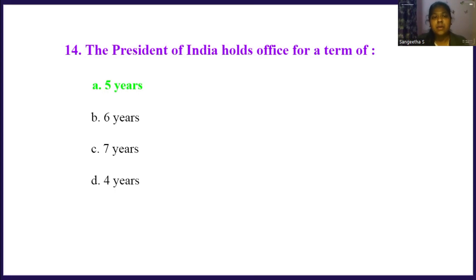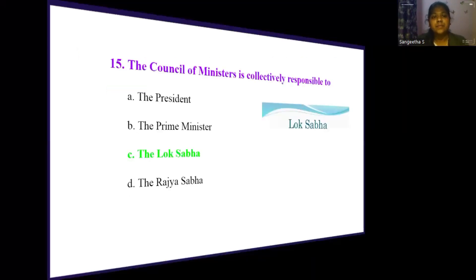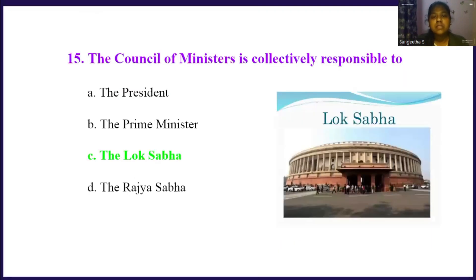The council of ministers is collectively responsible to: Option A, the president. Option B, the prime minister. Option C, the Lok Sabha. Option D, the Rajya Sabha. The right answer is option C, the Lok Sabha.